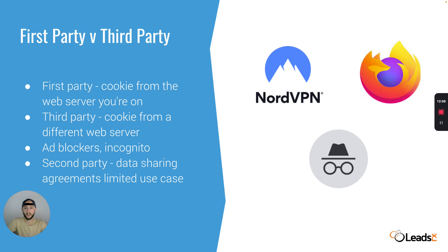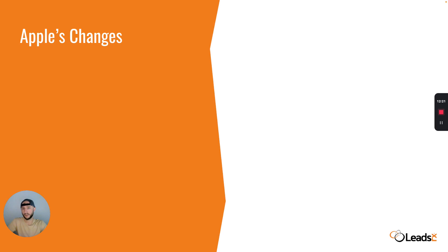Let's take a look at some of the changes from Apple because they are very significant and have had major repercussions throughout the entire industry. With Apple's latest software releases on their operating system, they are now hiding email opens. Marketers used to be able to track when somebody opens an email on their iPhone — what they clicked, what they viewed. Apple has completely hidden that data and is now passing back to advertisers the notion that every email is opened, so you don't get to know which of their customers are or are not opening your emails in order to track them later on in their customer journey.